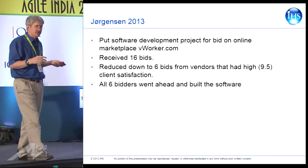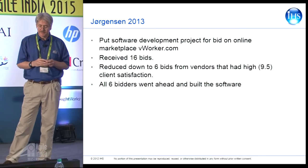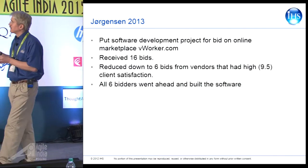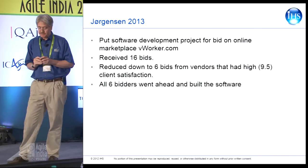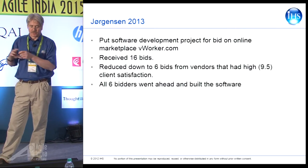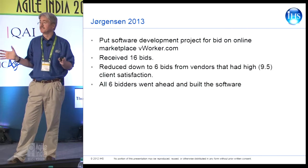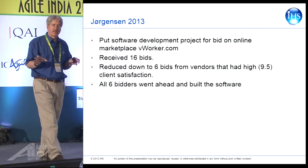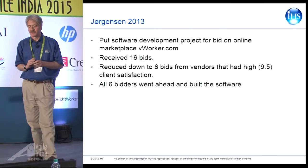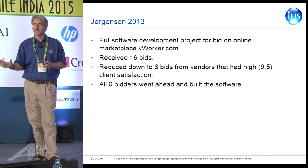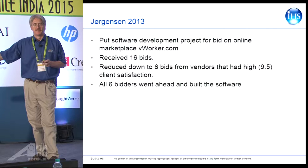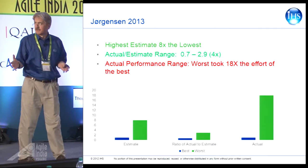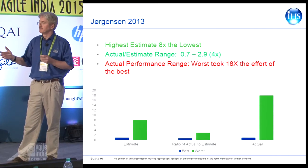Some more data — this is recent data from Magne Jørgensen from Sintef in Norway. He's one of the best researchers in this area. He put a software development project out for bid online on vworker.com, a virtual worker environment. They received 16 bids, pre-selected down to 6 from vendors with very high client satisfaction. All 6 bidders gave their estimates and actually did the project. What we find is that the data is all over the map — the highest estimate to the lowest estimate was a factor of 8 to 1.